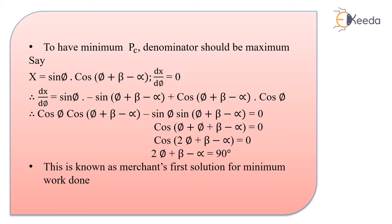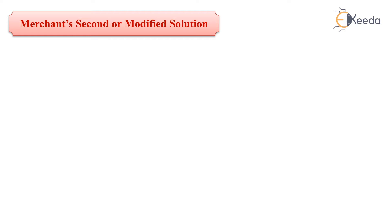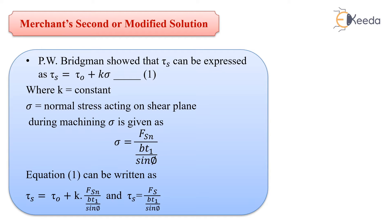This was the first solution. Now we are going to understand the second solution, also called the modified Merchant's theory. In the first theory, Merchant considered only the shear stress on the shear plane. But P.W. Bridgman showed that on the shear plane there is not only shear stress, but also normal stress.